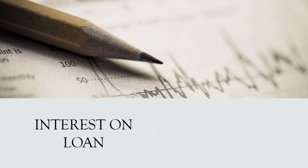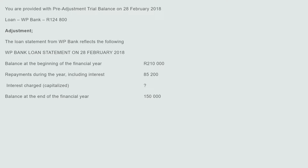Looking at interest on loan — the different formats they always ask. Let's look at how they asked it here. You are provided with a pre-adjustment trial balance from 28 February 2018. The loan at WP Bank was $124,800. The loan statement from WP Bank reflects the following.